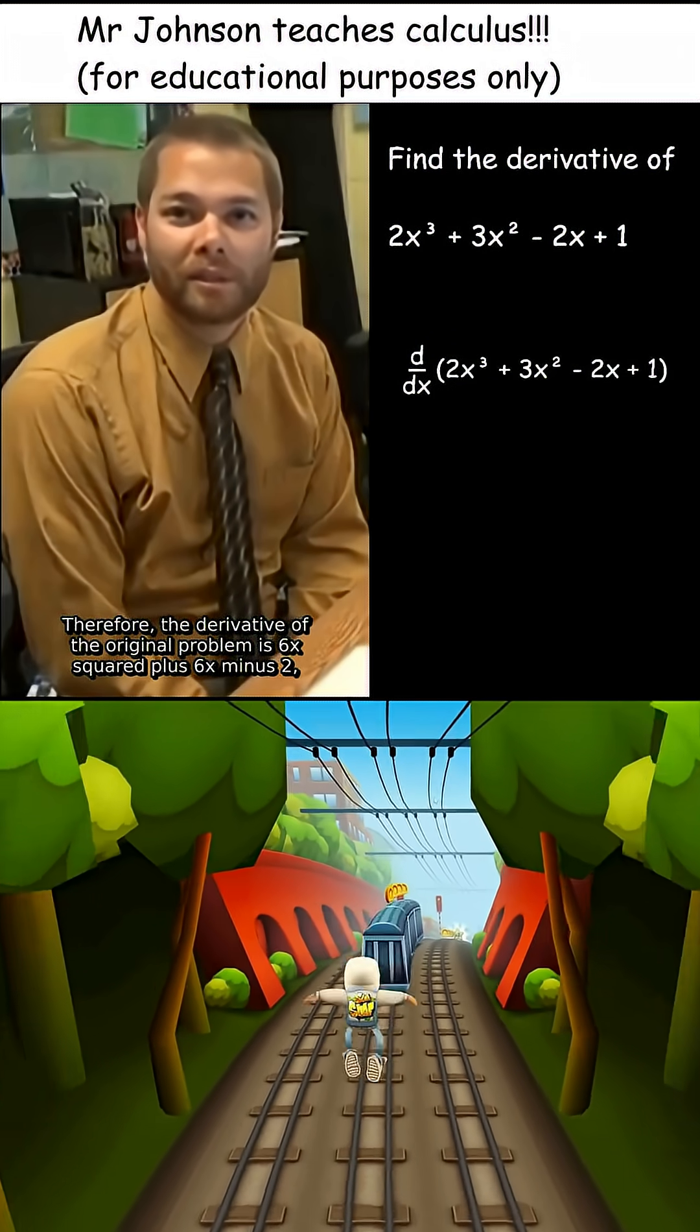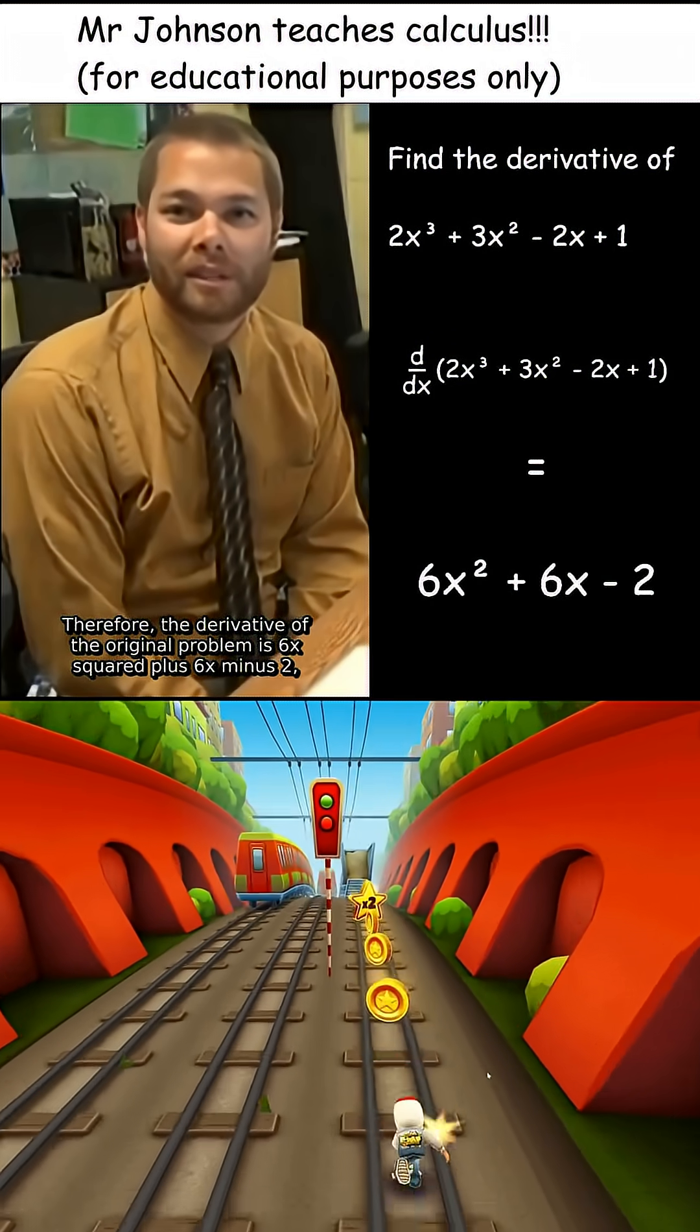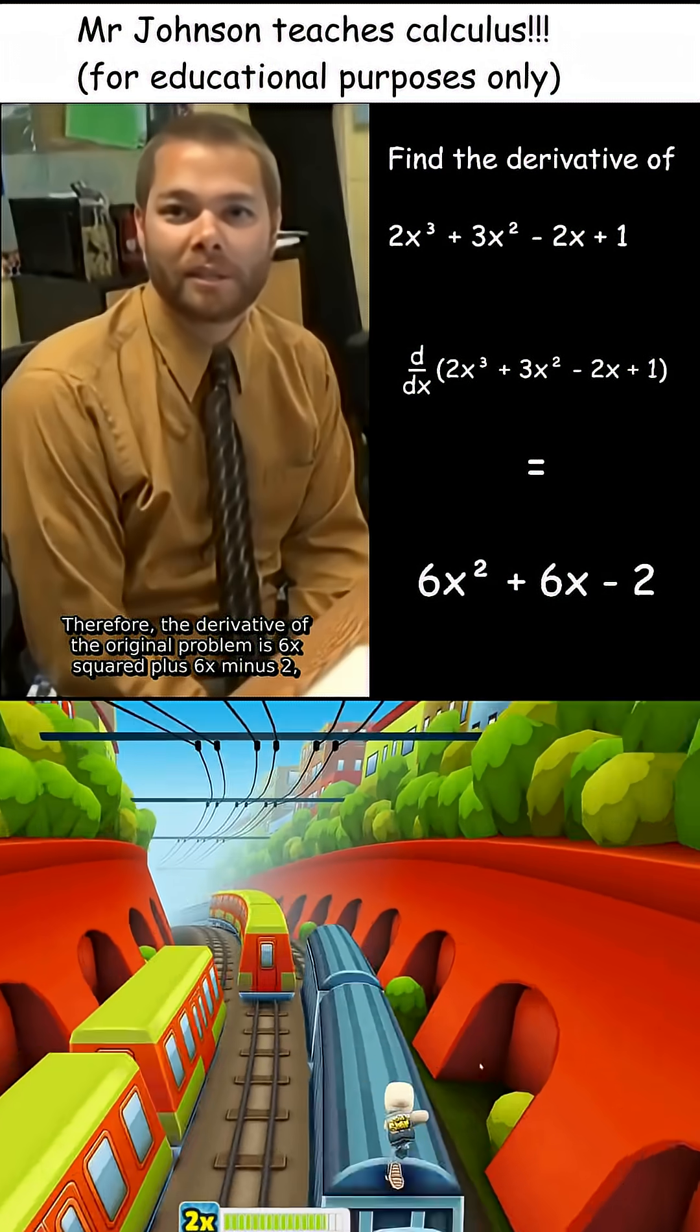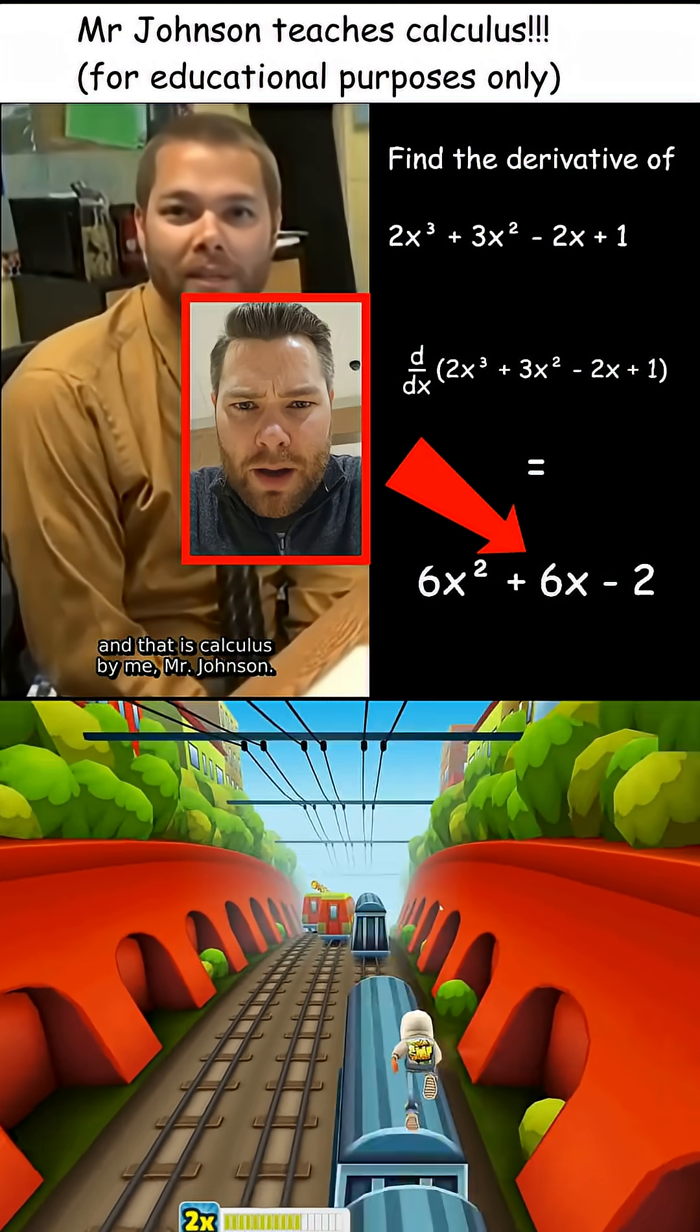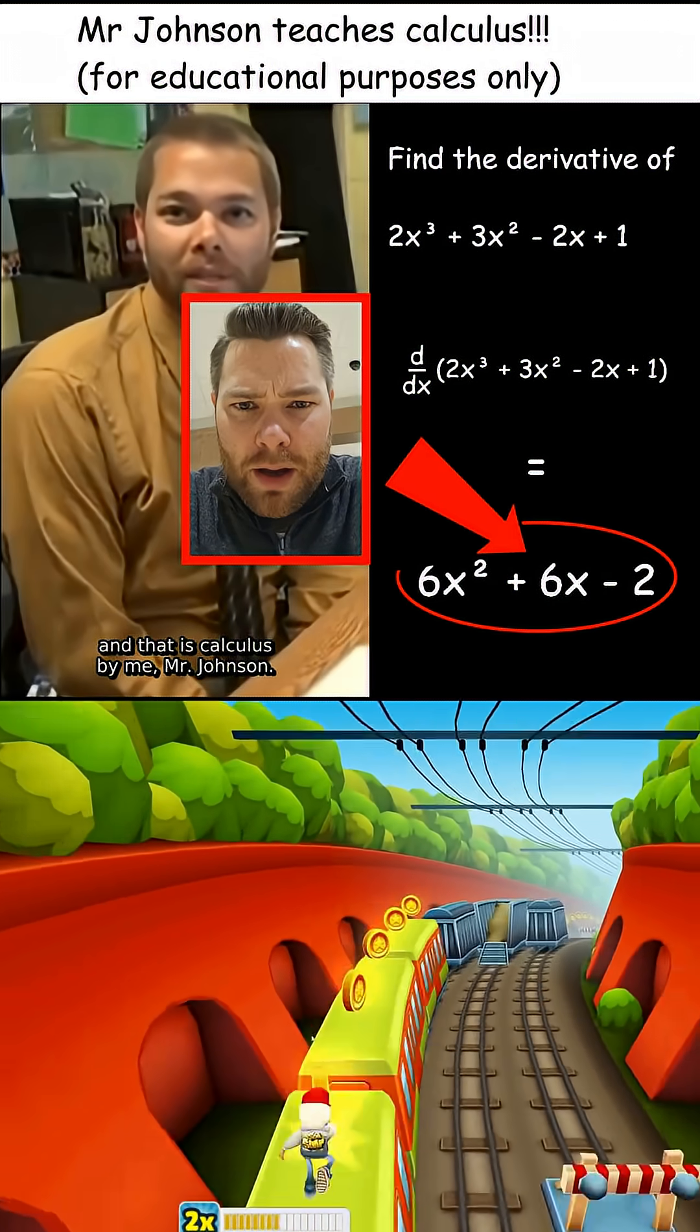Therefore, the derivative of the original problem is 6x² + 6x - 2. And that is calculus by me, Mr. Johnson.